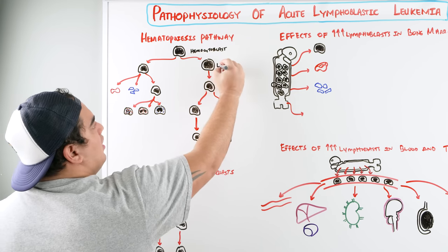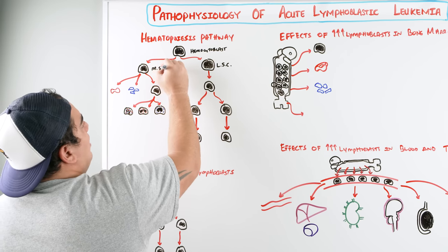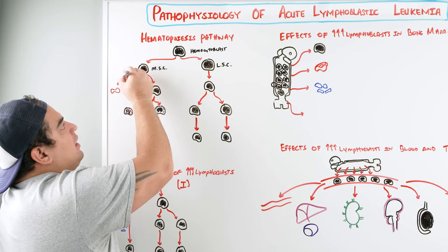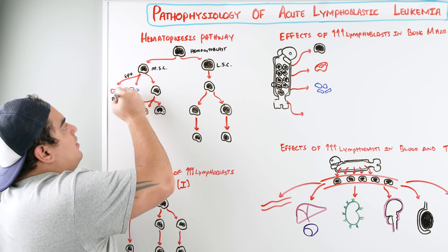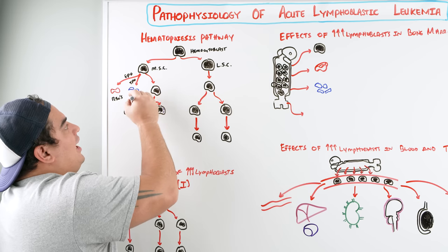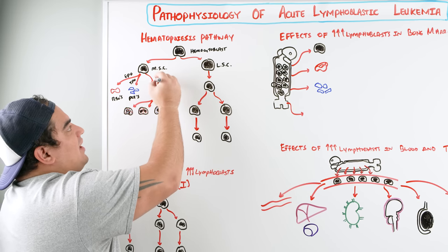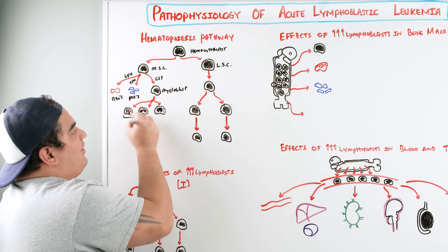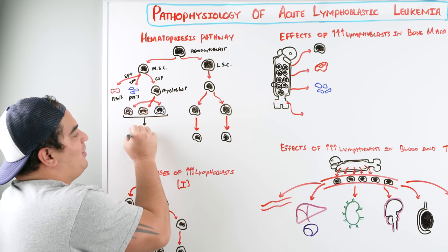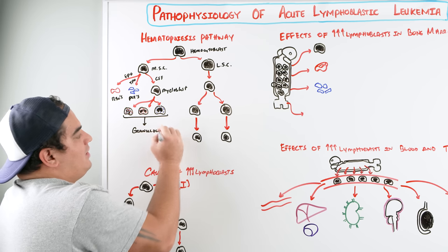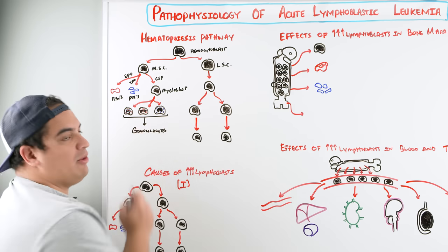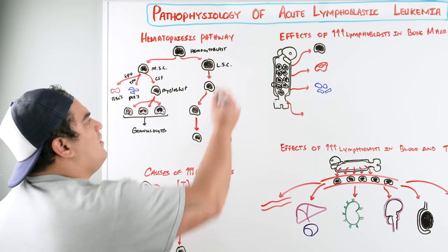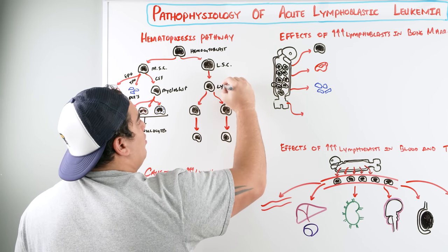The hemocytoblast differentiates into a lymphoid stem cell and a myeloid stem cell. The myeloid stem cell, in the presence of erythropoietin, makes red blood cells; with thrombopoietin, it makes platelets; and with colony stimulating factors, it becomes a myeloblast, which then differentiates into granulocytes — neutrophils, eosinophils, and basophils.